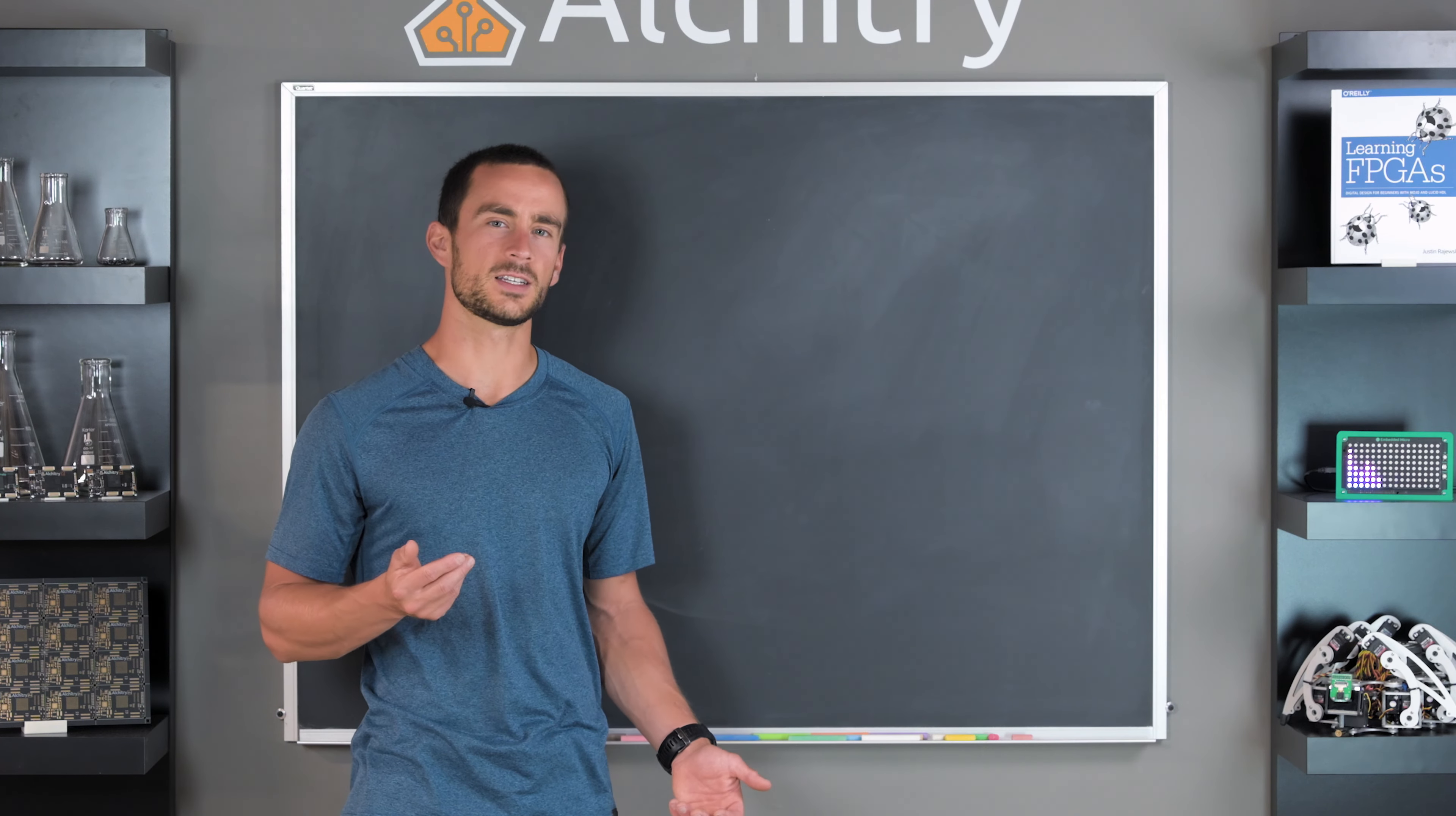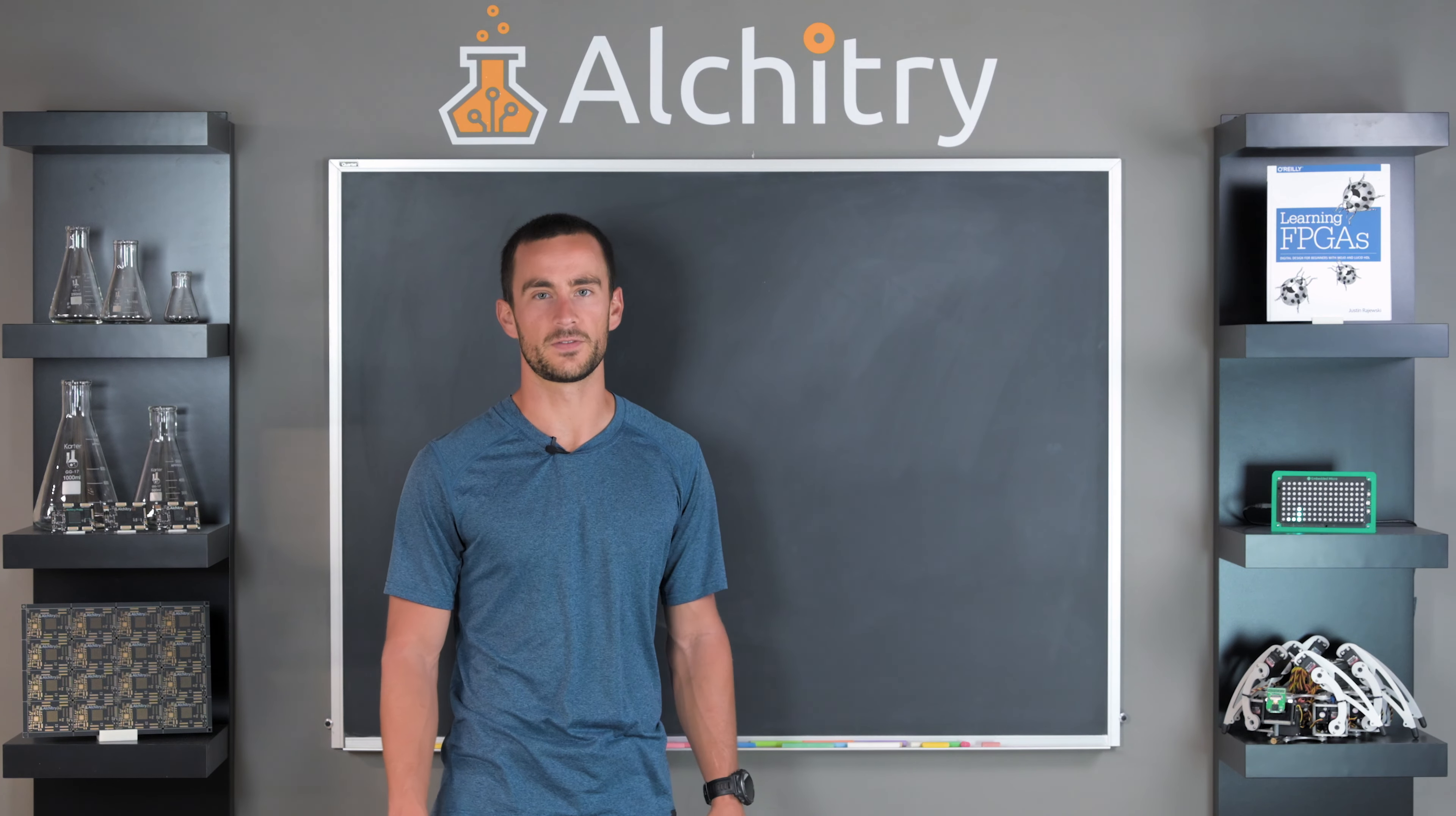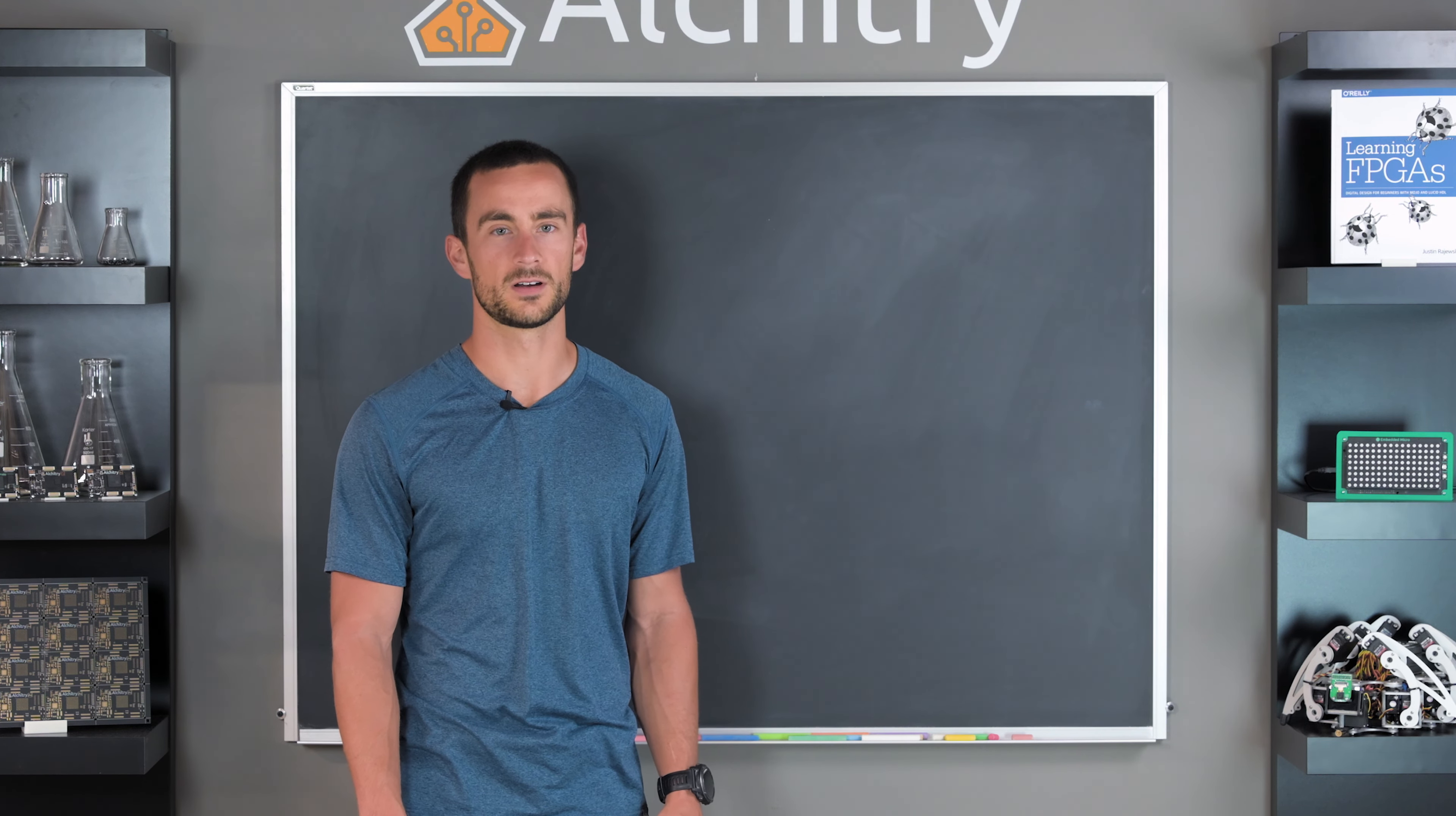But why do we do this? Isn't that kind of wasteful? We have all these voltages that we could use to represent data. The biggest reason that digital circuits are so widely used is because they are very robust. The real world isn't perfect, and circuits need to deal with all kinds of interference. This means that signals in a circuit will often see small voltages added or subtracted to them at random. This is known as noise. If the exact voltage in a circuit was really important, this noise could be devastating on the circuit's behavior.